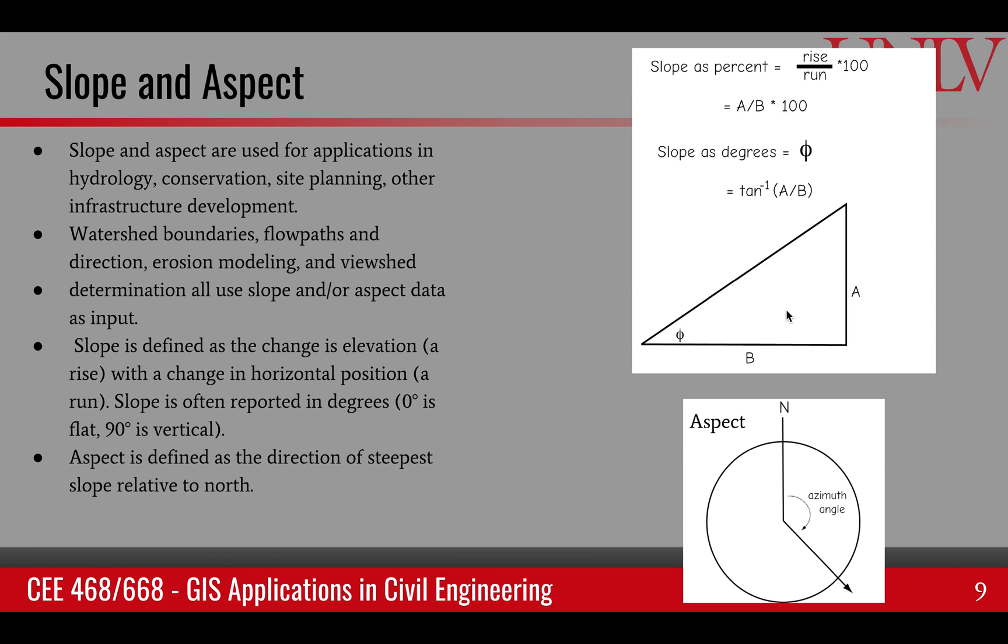The aspect angle on the other hand is relative to the north direction in a clockwise direction. So it'll be zero for north and 90 degrees for east, 180 for south, 270 for west, and 360 completes the circle.